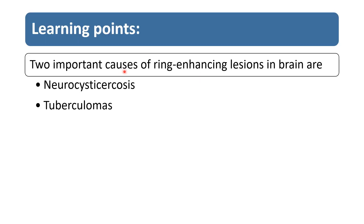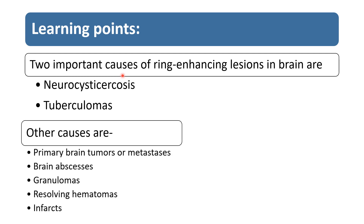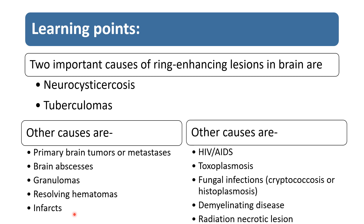The learning points: the two important causes of ring enhancing lesion in the brain in India are neurocysticercosis and tuberculoma. While in other countries, primary brain tumor or metastasis are more common. Brain abscess, other granulomas, some resolving hematomas or infarcts can also present as ring enhancing lesion. Even in HIV/AIDS — toxoplasmosis, some fungal infections such as cryptococcosis and histoplasmosis — ring enhancing lesions can be seen on MRI brain. Demyelinating diseases or radiation-induced necrotic lesions also present as ring enhancing lesions.